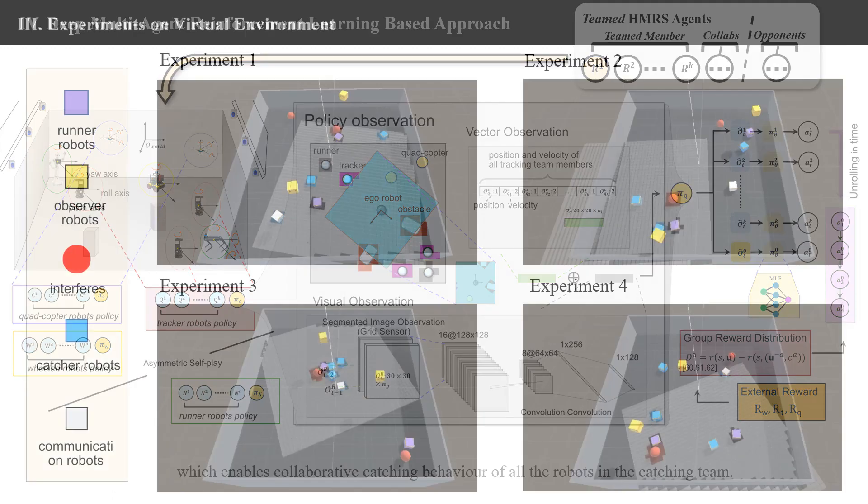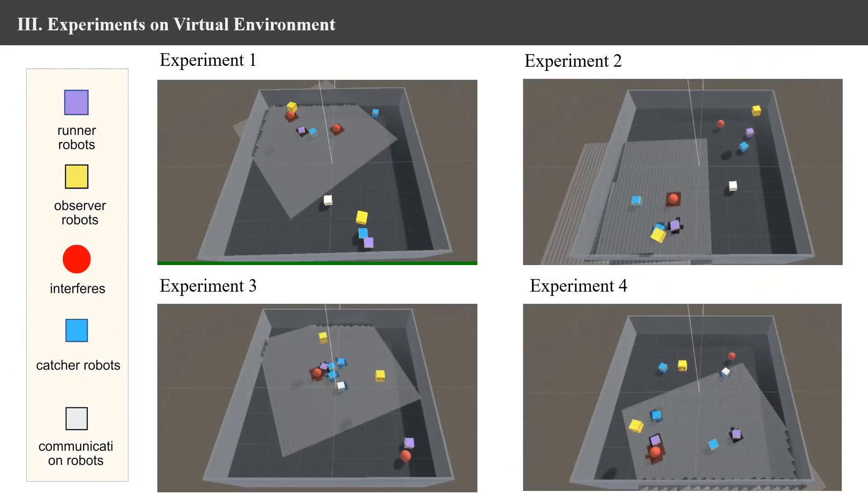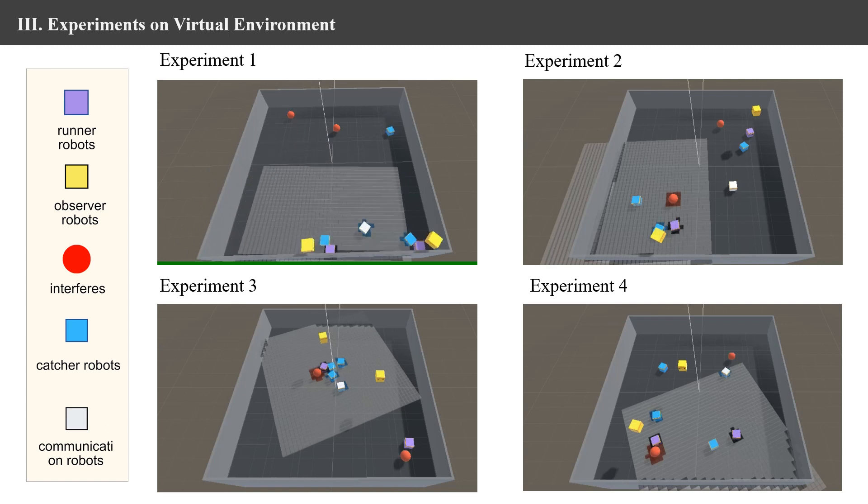Here we show several experiments. At the moment, two of the catcher robots are following the runner robots while the third one is still searching. Now the third catcher robot noticed that two runner robots are being suspended. It tries to find a proper time and angle to help its teammates.